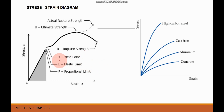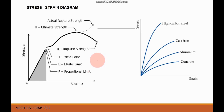Next is the yield point — the point at which there is an appreciable elongation or yielding of the material without any corresponding increase of load. Even without increasing the load, there is still a continuous change in length of the material. However, this behavior is specific to steel; other grades of steel, steel alloys, and other materials do not possess a well-defined yield point.